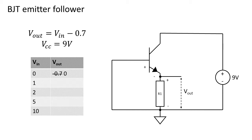So the output voltage will be limited to zero volts. If we put 1 volt at the input, we get 300 millivolts at the output. If we put 2 volts, we get 1.3 volts.